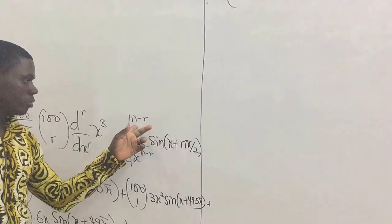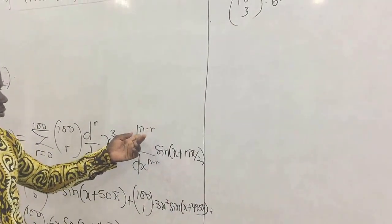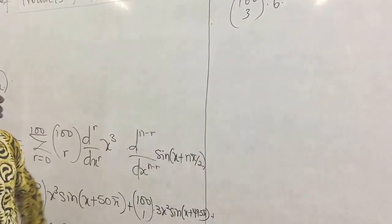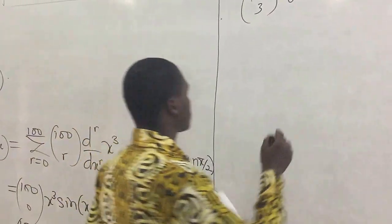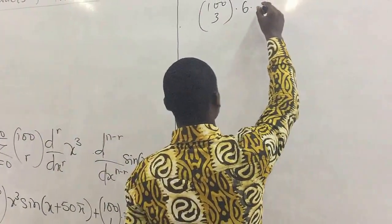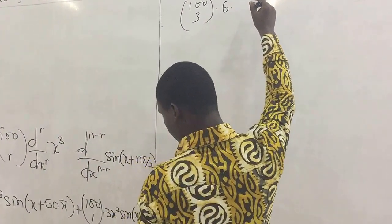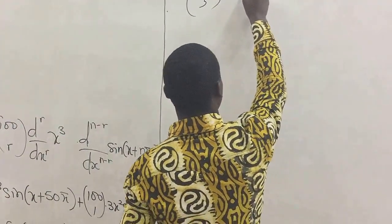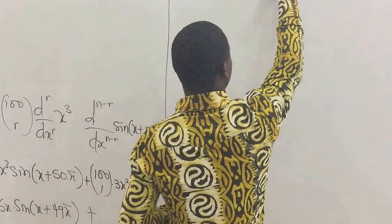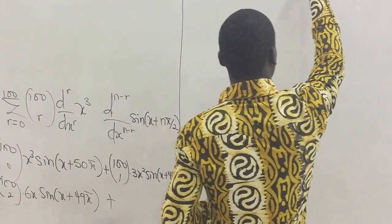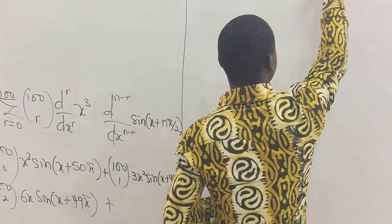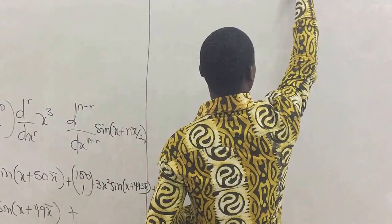And r being 3 means that to put 3 here, subtract it from 100, and we'll have 97. So put 97 here, we'll give us sine x plus 48.5 pi.